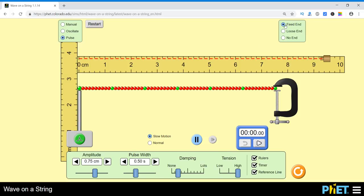Here we have also three other parameters like fixed end, here it is the fixed end, one side is fixed, loose end and the no end. So we will observe it in slow motion and also in the normal motion. Let's play with this.